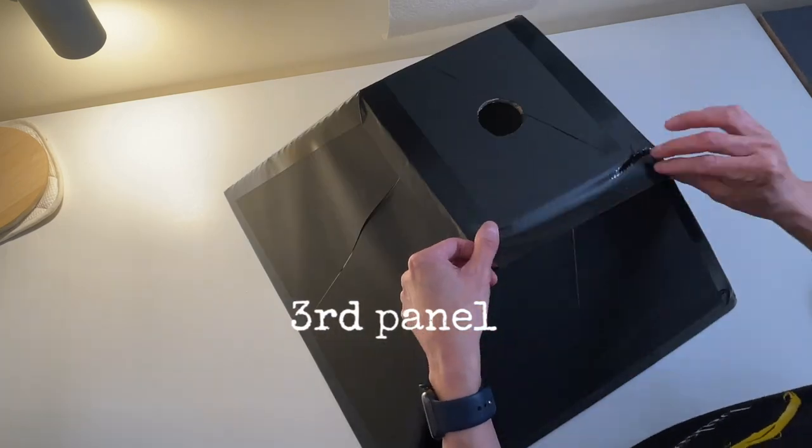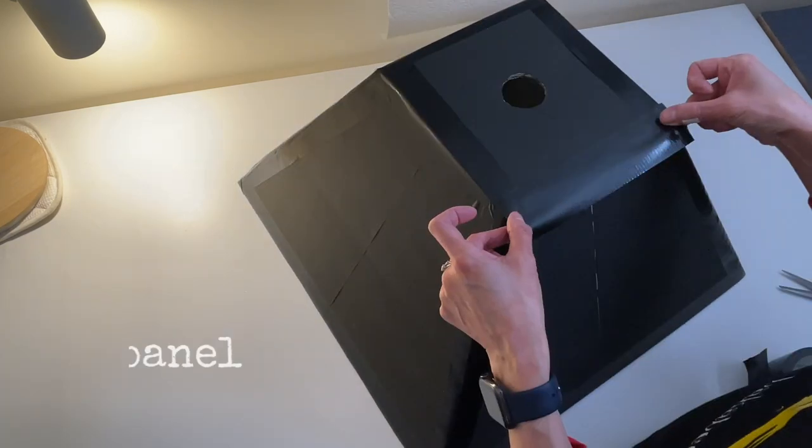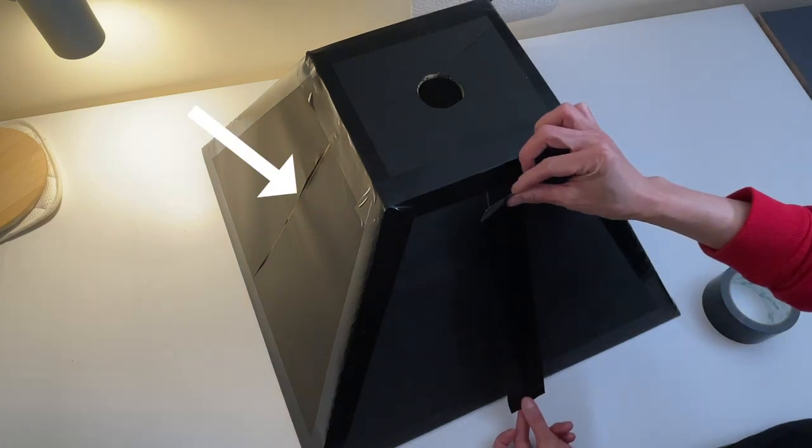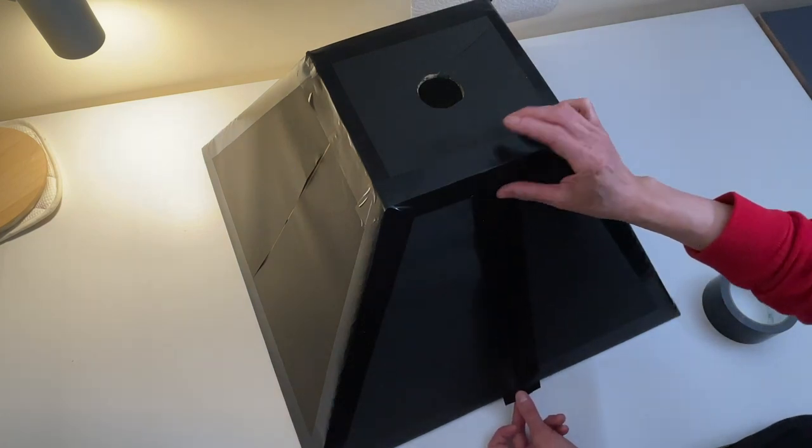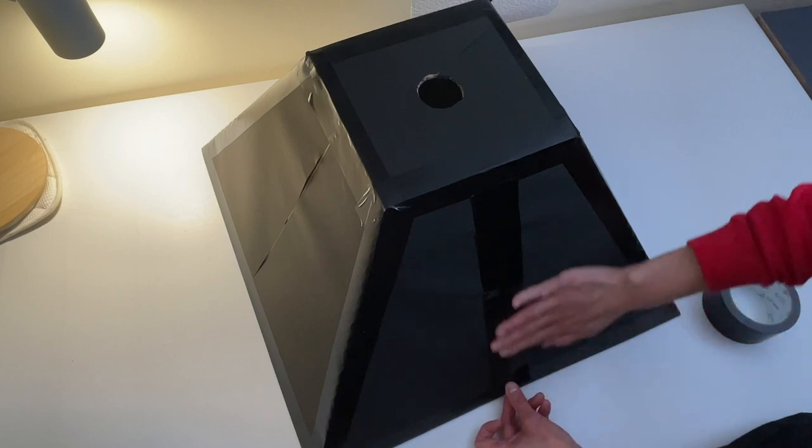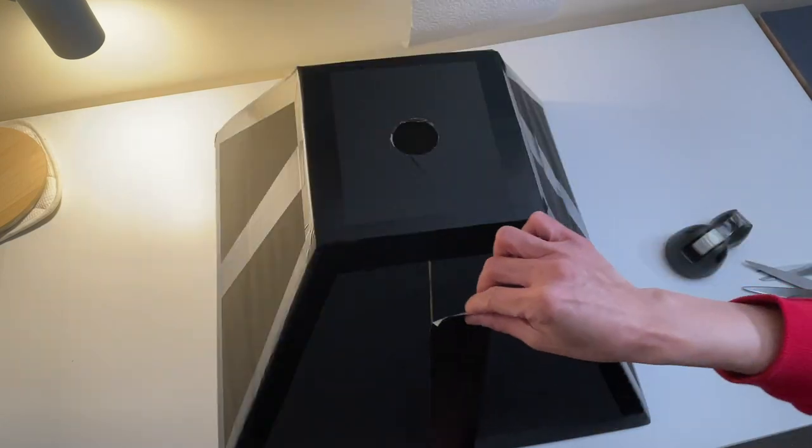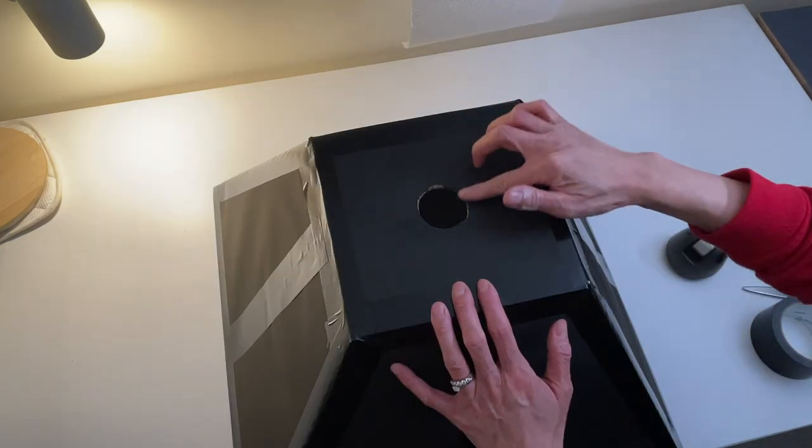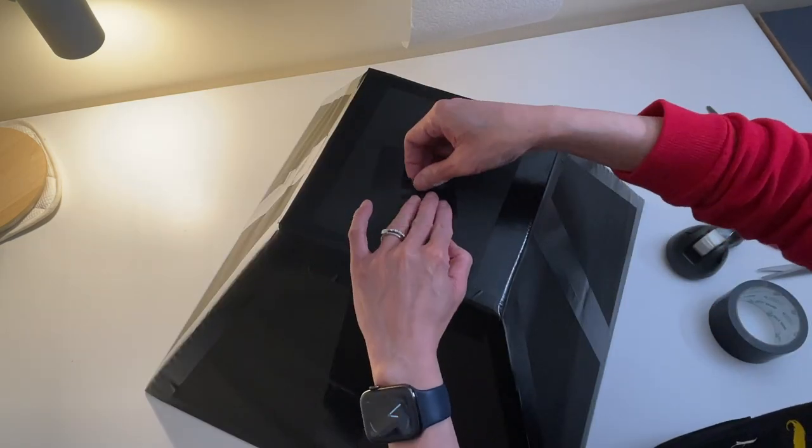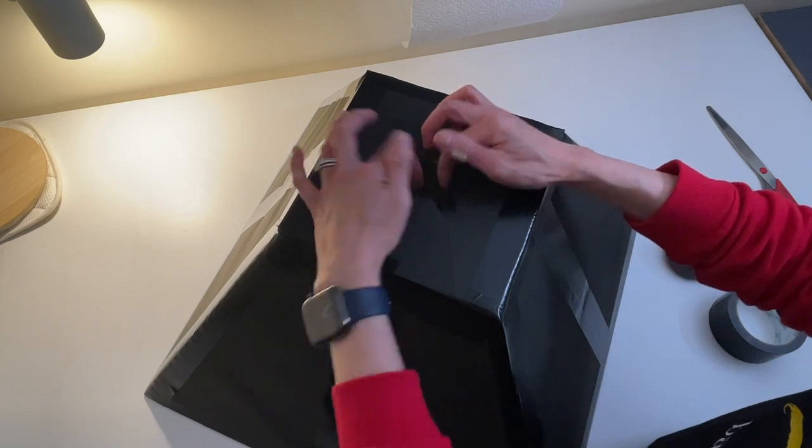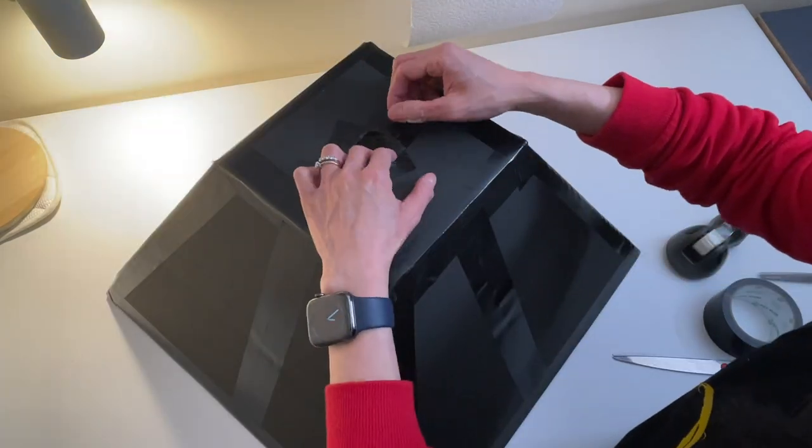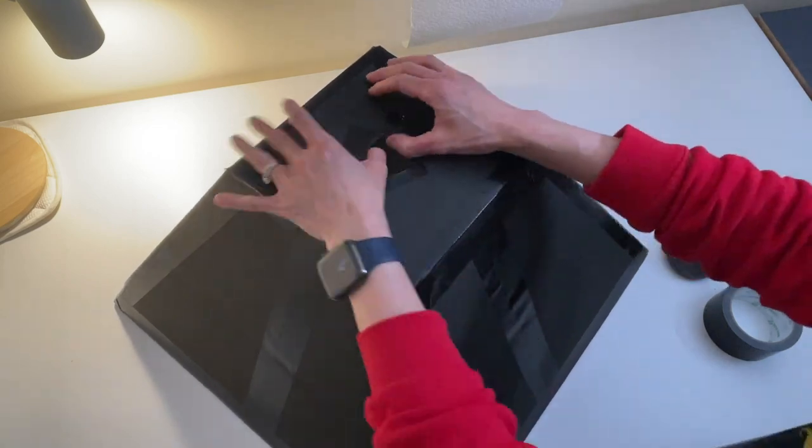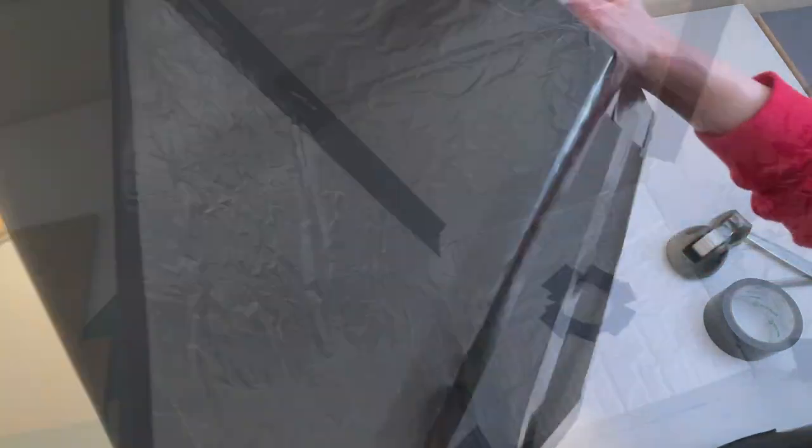Next, use the duct tape to cover the seams in the middle because I don't want to see the cardboard. This step is just for cosmetic purposes, nothing to do with the structure. All right, back to business. You will need to wrap some duct tape around the hole to stop it from tearing, because this is the main area to hold the softbox. The inside should look something like this.